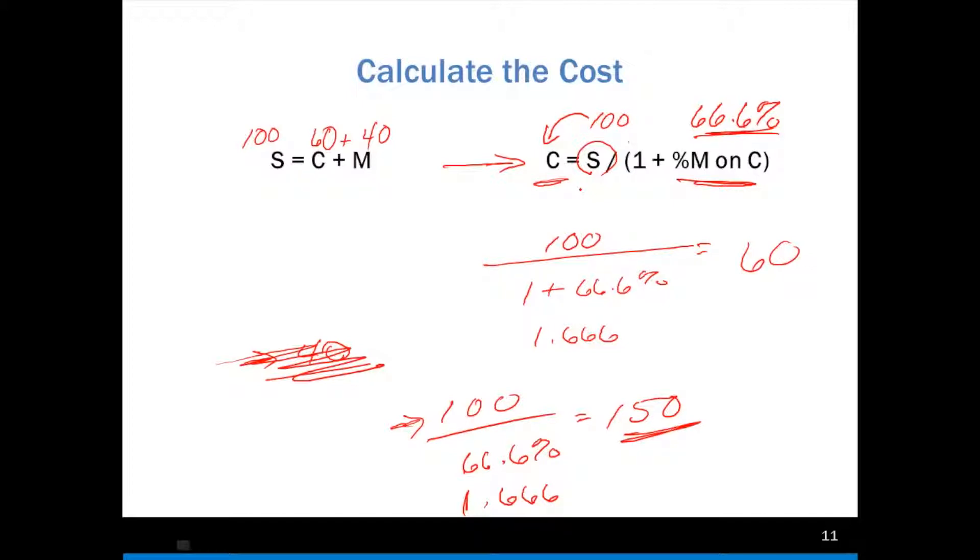I have a selling price. I need less than that, so I'm going to divide. And if I divide just by that percentage, I'm going to end up with a bigger number. But if I divide by 1, which is the 100, plus that percentage, that allows me to have a lower number, which would be 60, which would be my actual cost, and it makes more sense.